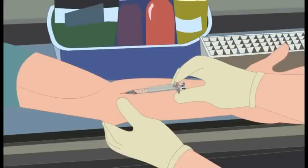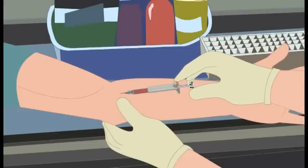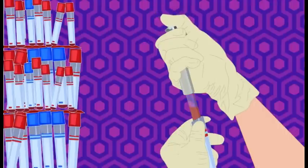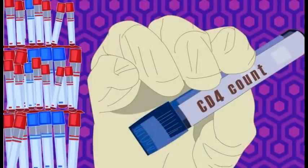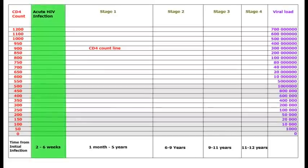A blood test can be done in the hospital or clinic to measure how many CD4 cells a person has. This test is called the CD4 count. During this time of acute HIV infection, the CD4 count goes from a normal level of 1,200 down to about 900.